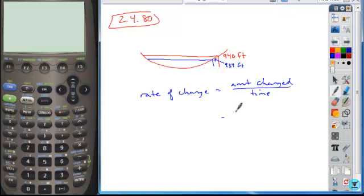And so the amount that changed is the difference between 940 and 934, so 6. And the number of days or the time interval that elapsed is 15 days.